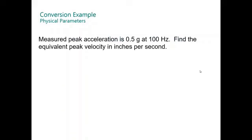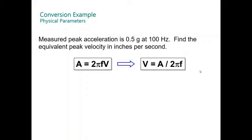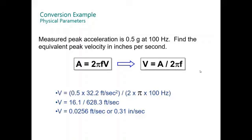Another example: measure the acceleration of 5.5 g's at 100 hertz. Find the equivalent peak velocity in inches per second. Remember acceleration is 2πfV. Now V is acceleration divided by 2πf. Using this conversion, the velocity is 0.0256 feet per second or 0.31 inches per second.